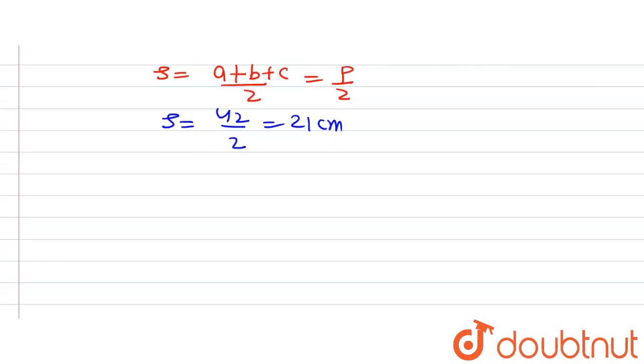Now let's write down the area, the Heron's formula that we are going to use to find the area of triangle. The formula says that area is equal to under root s times s minus a times s minus b times s minus c.